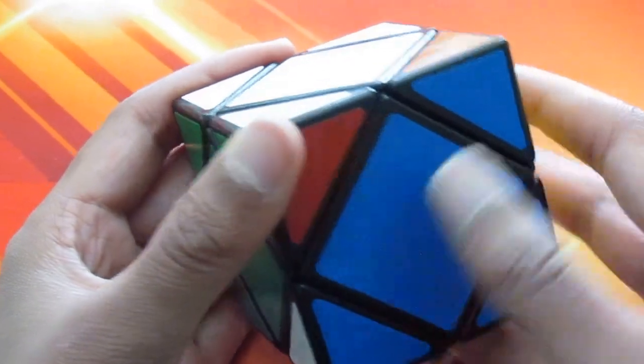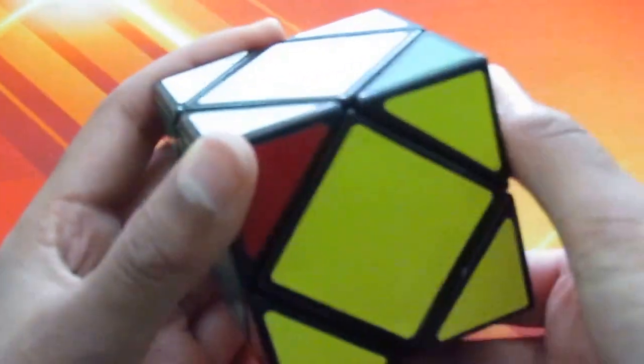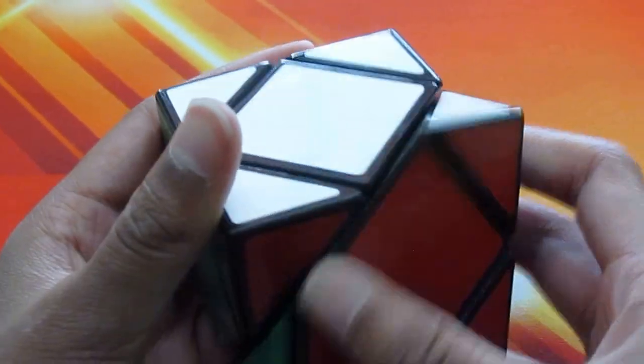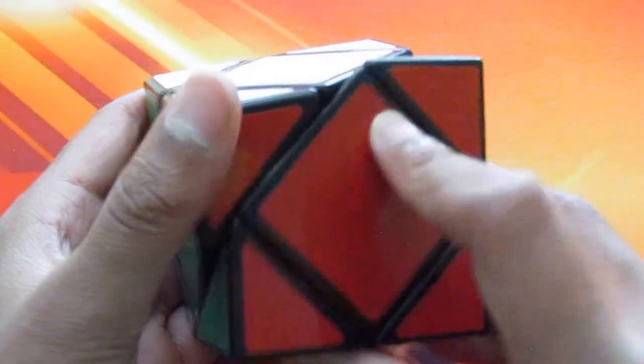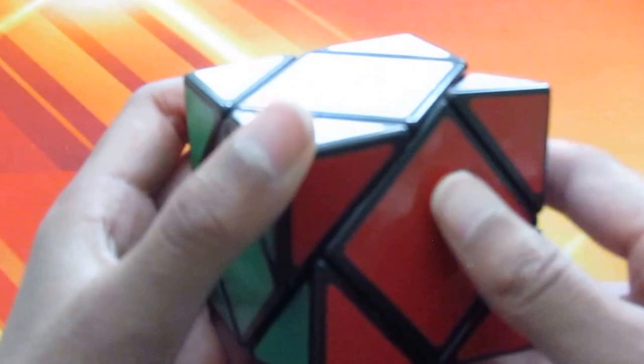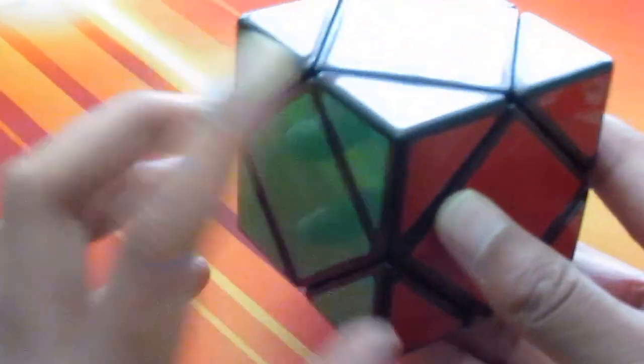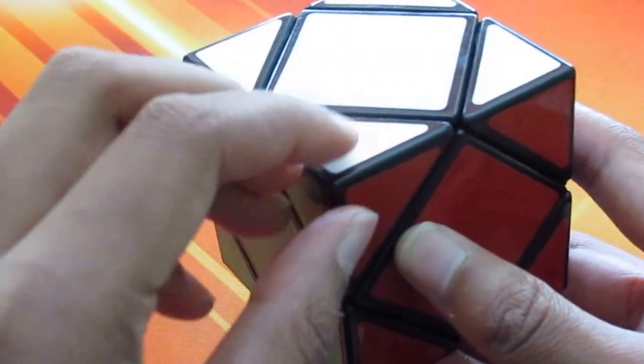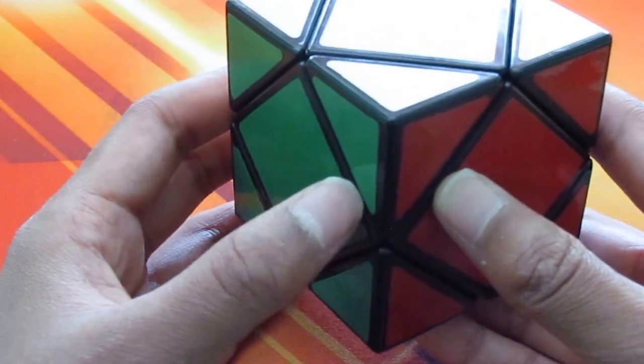So towards you would be right inverted, this is right inverted, and then away from you is right. Whenever you do right and left you want to make sure that this corner right here never moves. If it does, then you're probably doing it wrong.